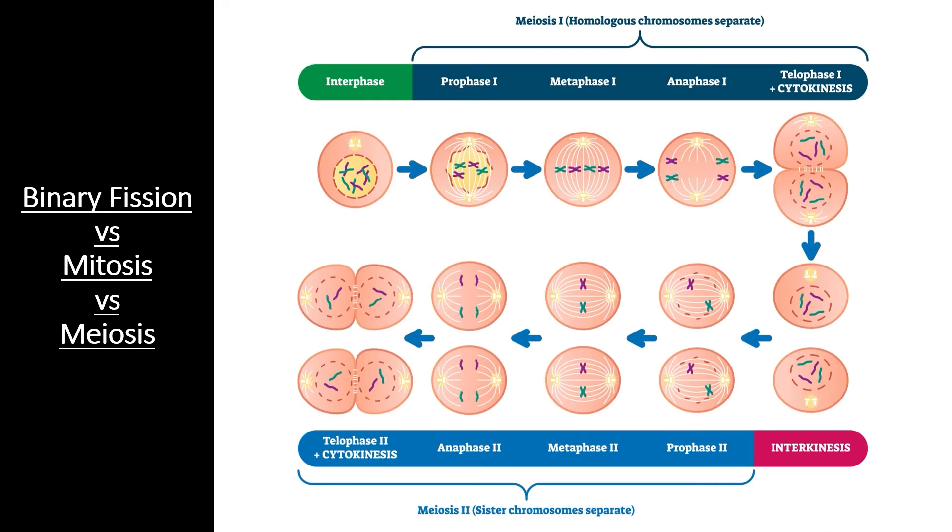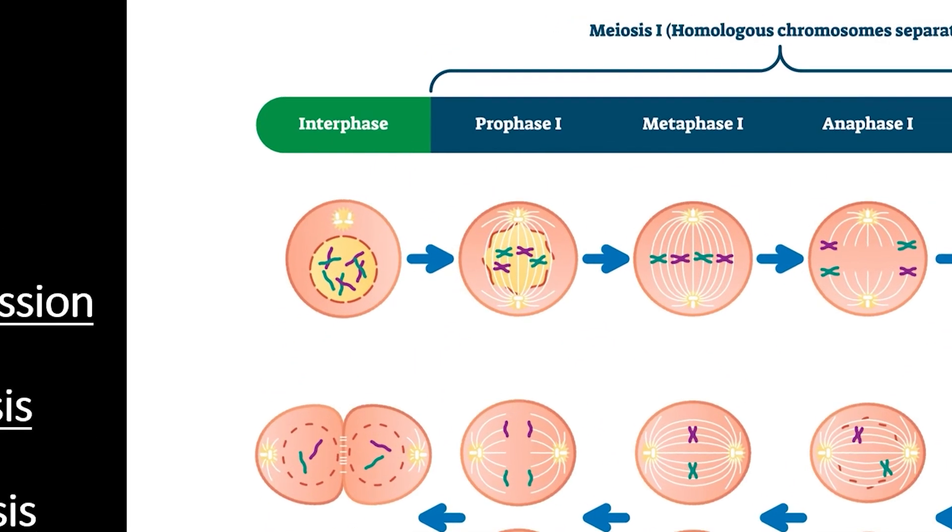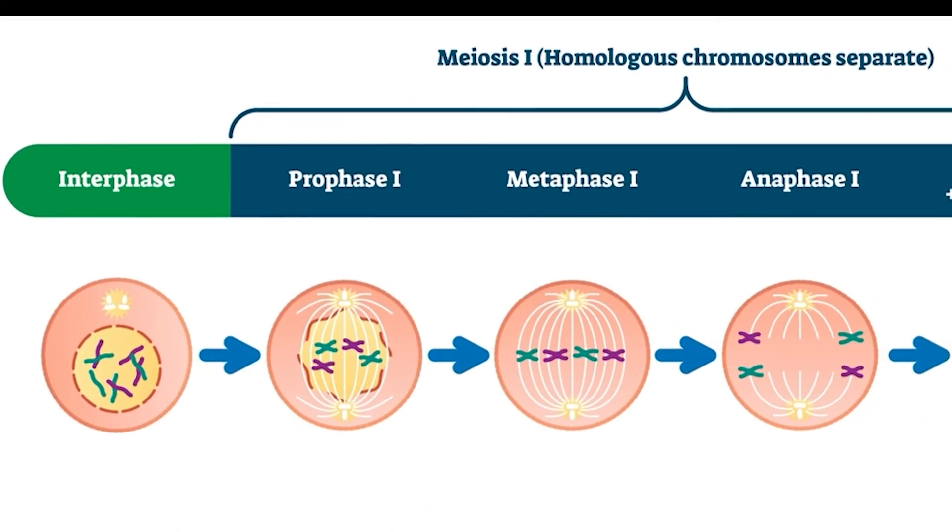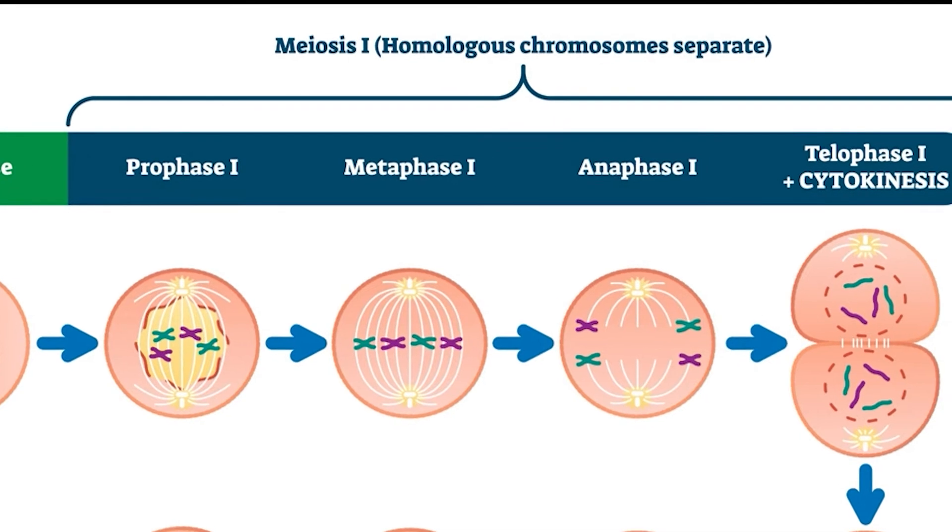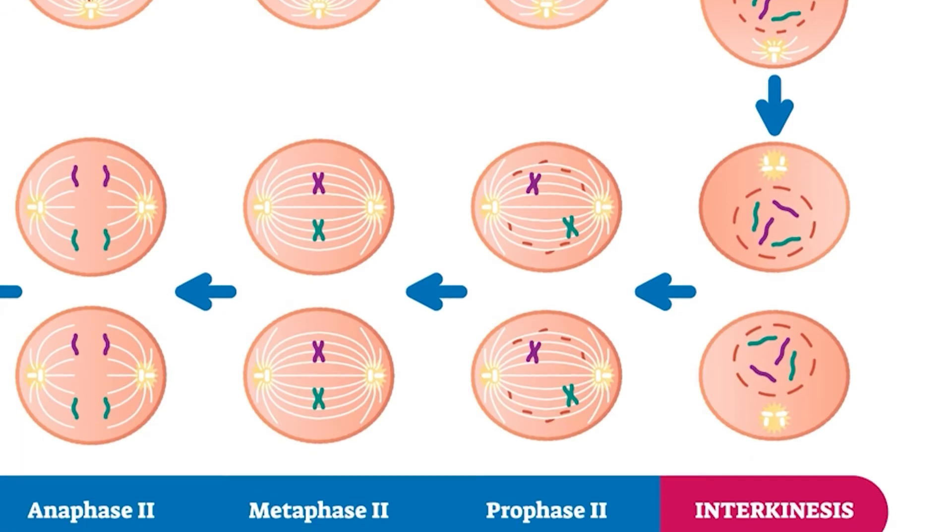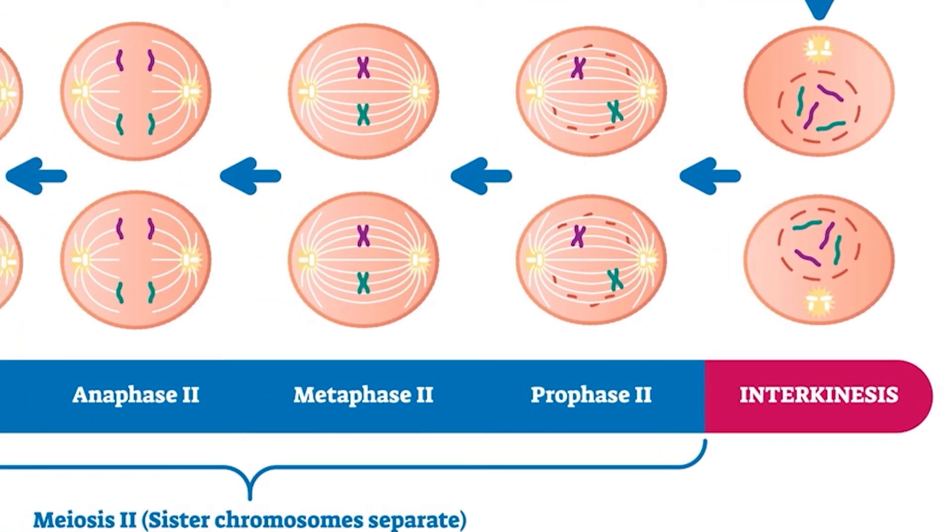The final form of cell division is meiosis. Organisms that reproduce sexually need to reduce the amount of DNA in each gamete cell, such as a sperm or egg. Otherwise, the genome would double in size every time two cells merged. We'll cover this complex form of cell division in section 5.1.